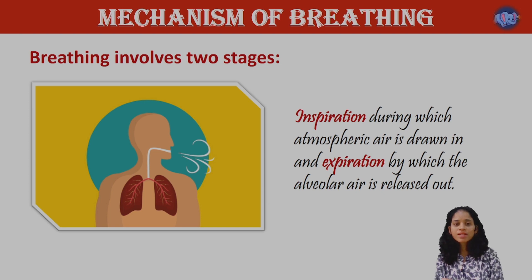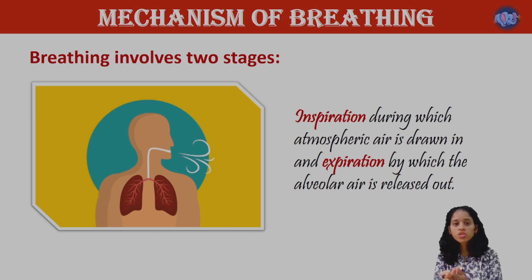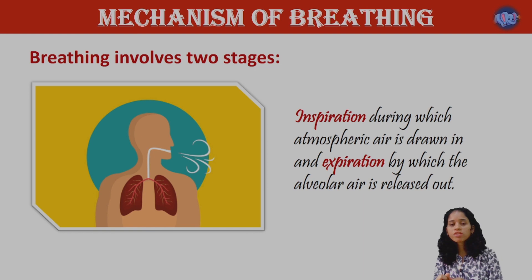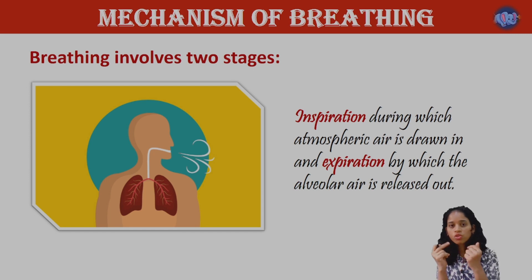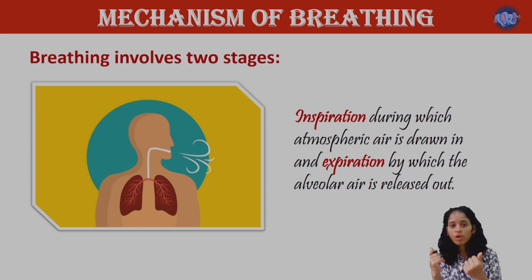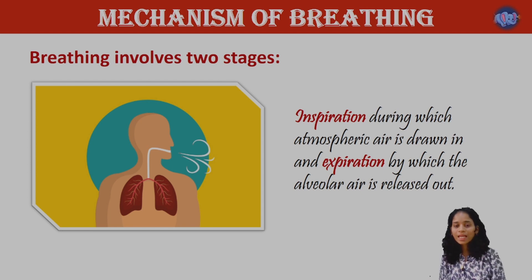Hi students, today's class is on the human respiratory system. The human respiratory system consists of a pair of external nostrils, then nasal passage, nasal cavity, nasal chamber which opens to the nasal pharynx, then trachea, then primary bronchi, secondary bronchi, tertiary bronchi, bronchioles, terminal bronchioles, and finally alveoli.